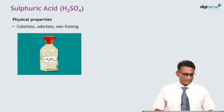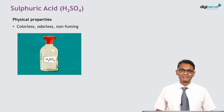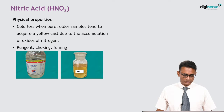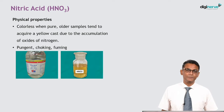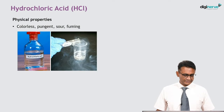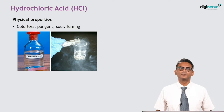Now, what are the physical properties? Sulfuric acid is colorless, odorless, and non-fuming. Nitric acid is colorless when pure; older samples tend to acquire a yellow cast due to accumulation of oxides of nitrogen — you can see in the second image it is yellowish in color — and it is pungent, choking, and fuming. Hydrochloric acid is colorless, pungent, sour, and fuming.